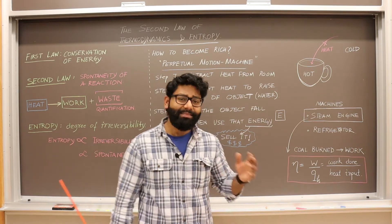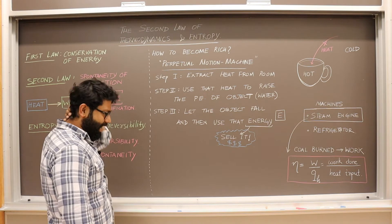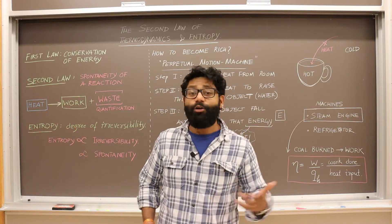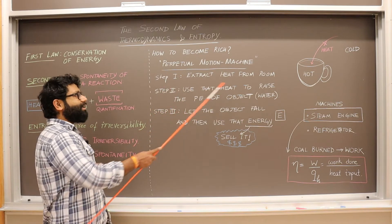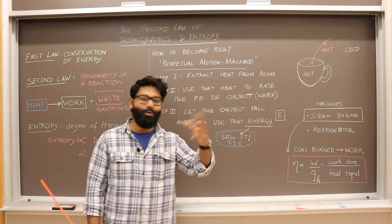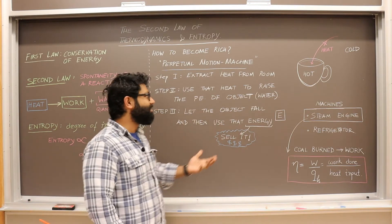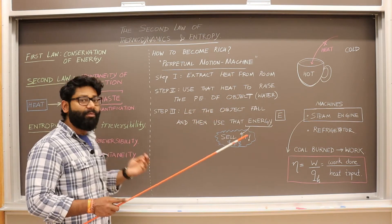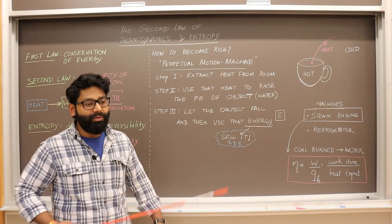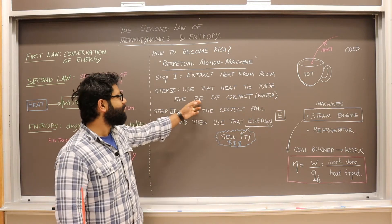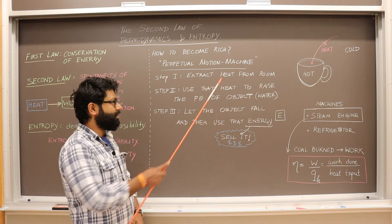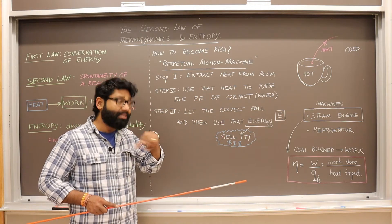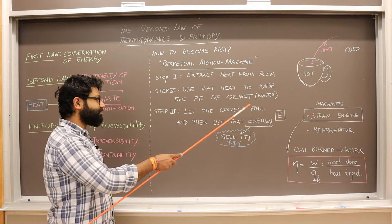Now let's understand the concept of a perpetual motion machine. To make one: step one, extract heat from a room — you can do that. Step two, use that heat to raise the potential energy of some object, say water. Step three, let that object fall — when the object falls, it decreases its potential energy and releases energy.